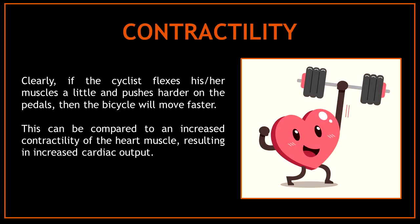Another important component of cardiac output is contractility. If the cyclist flexes the muscles and pushes harder on the pedals, the bicycle will move faster. This can be compared to increased contractility of the heart muscle, resulting in increased cardiac output.